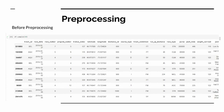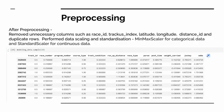Next, we performed preprocessing. We removed unnecessary columns such as race ID, tracker index, latitude, longitude, and distance ID, which could not offer much information beyond the horse's geographic location. We also removed duplicate rows. We then performed scaling and standardization, using a MinMax scaler for categorical data and a standard scaler for continuous data to standardize the impact of each feature on the target variable, which is odds.